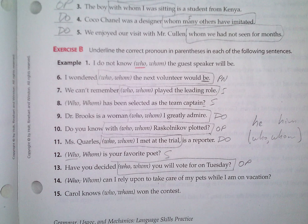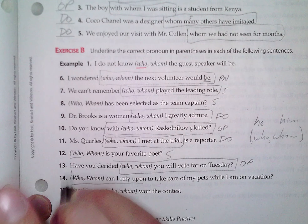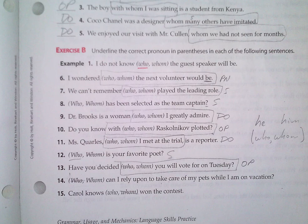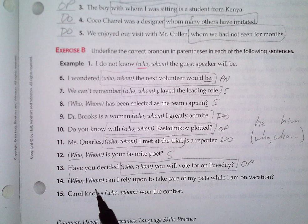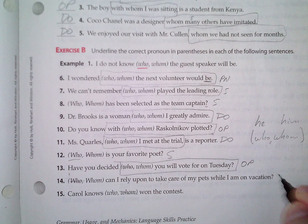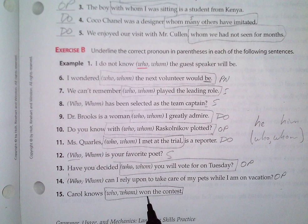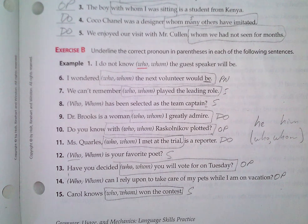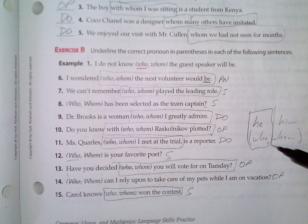Whom can I rely upon to take care of my pets while I'm on vacation? This is a question, not a subordinate clause, so we don't bracket anything. We rephrase it: I can rely upon whom. Is it 'I can rely upon he' or 'I can rely upon him'? It's definitely him, so we go with whom — it's an object of a preposition. Carol knows who won the contest. Who or what won? It's who — who is the subject. Is it 'he won the contest' or 'him won the contest'? It's definitely he, so you go with who. Remember, he and who go together and him and whom go together.